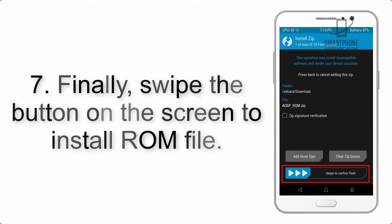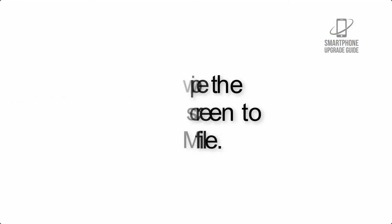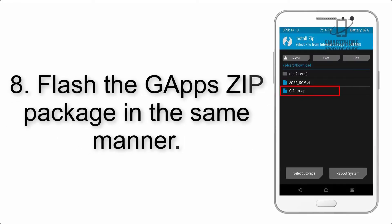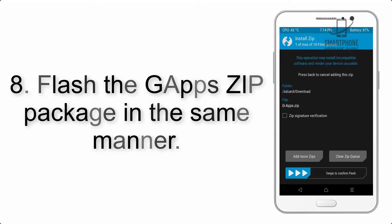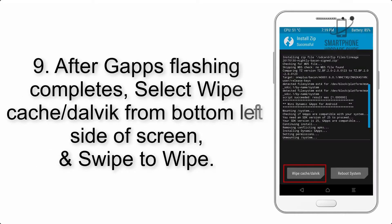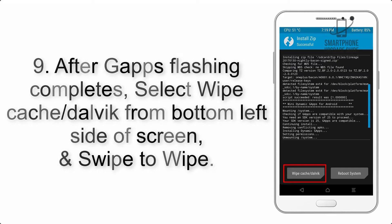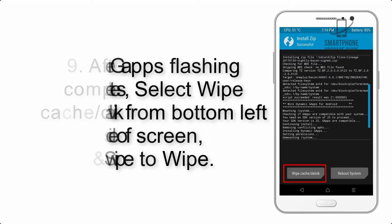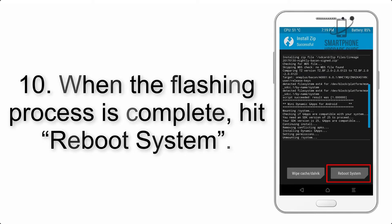Step 8: Flash the GApps zip package in the same manner. Step 9: After GApps flashing completes, select Wipe Cache and Dalvik from the bottom left side of the screen and swipe to wipe. Step 10: When the flashing process is complete, hit Reboot System.